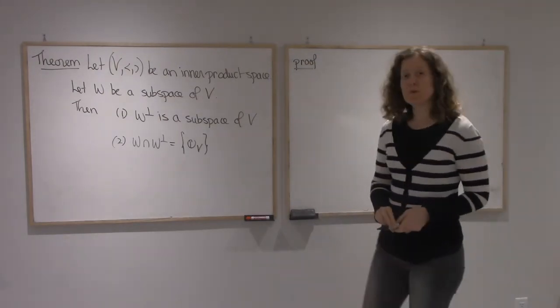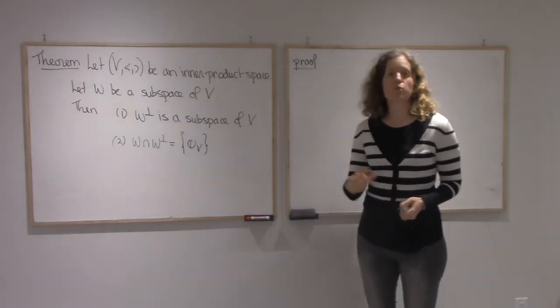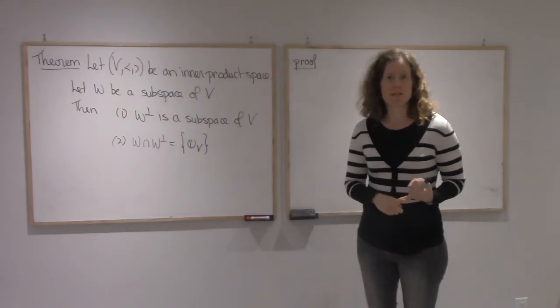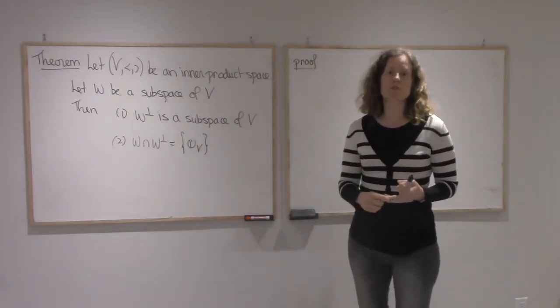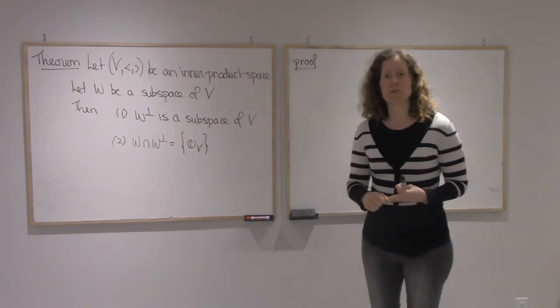So to prove that W-perp is a subspace, I need to prove three properties. I need to prove that zero is in it, I need to prove that it's closed under addition, and closed under scalar multiplication.